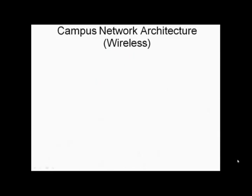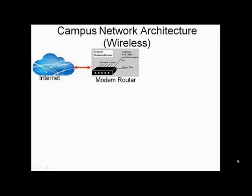Campus network architecture: Here we'll explain the functionality of wireless network architecture for a college or university campus. Information from the internet is handled by a modem-router device that performs both tasks. A firewall is installed between the router-modem and the backbone switch.